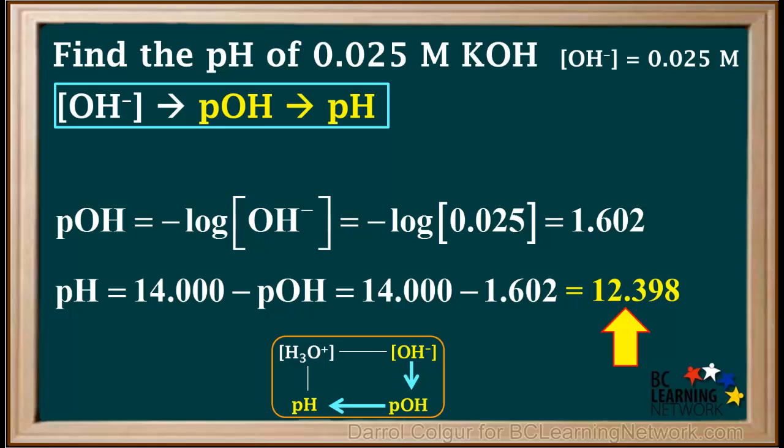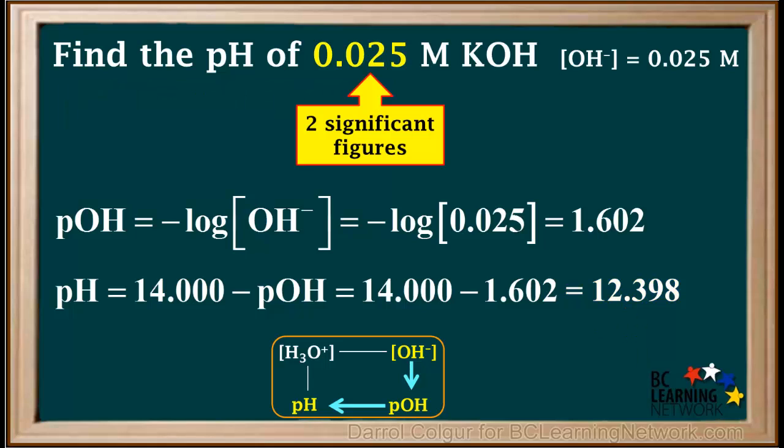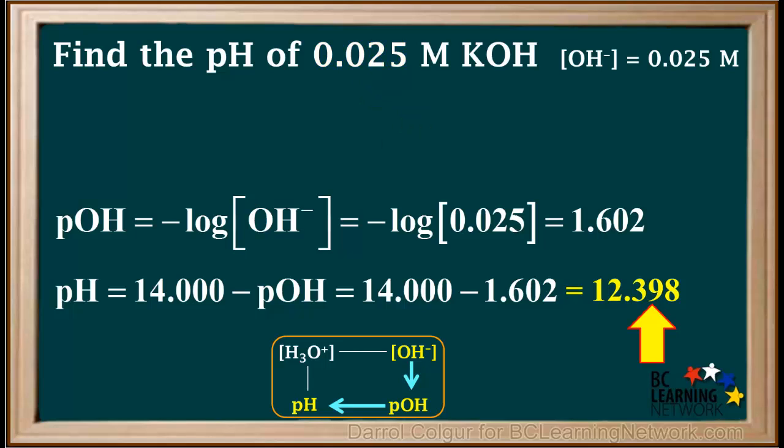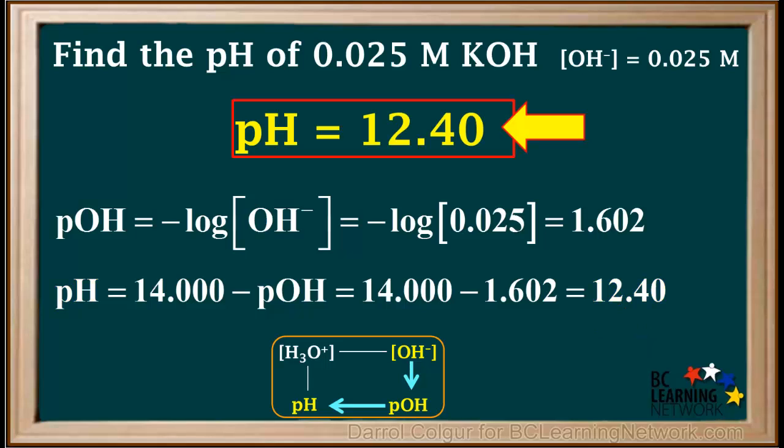However, looking back at the original given concentration, it was two significant figures. So 12.398 needs to be rounded to two decimal places, which comes out to 12.40. So the final answer is pH is equal to 12.40. A pH of 12.40 is a reasonable pH value for a strong base like KOH.